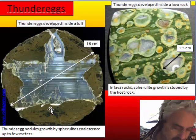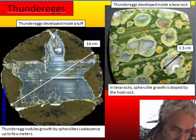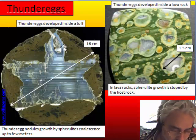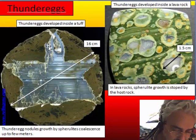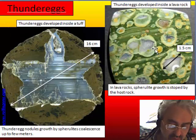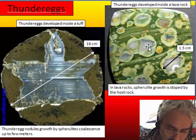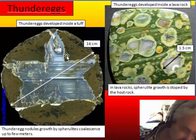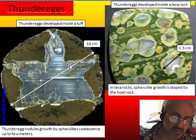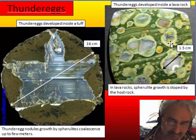If we are in tuff, however, the spherulite can aggregate together, stick together, and through coalescence make a large nodule. This big nodule forms starting from one small spherulite with one small fracture that grows and grows until we can have a thunder egg of a few meters. So this illustrates the scale difference between these two samples.